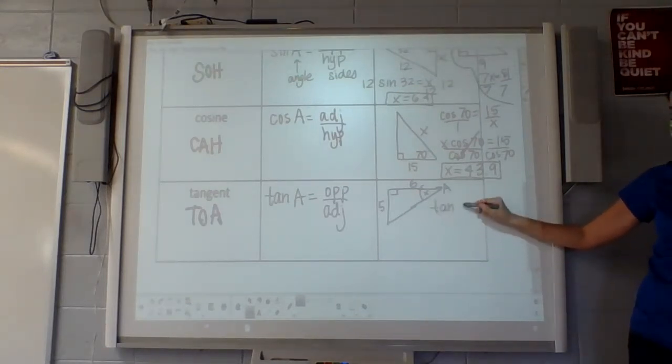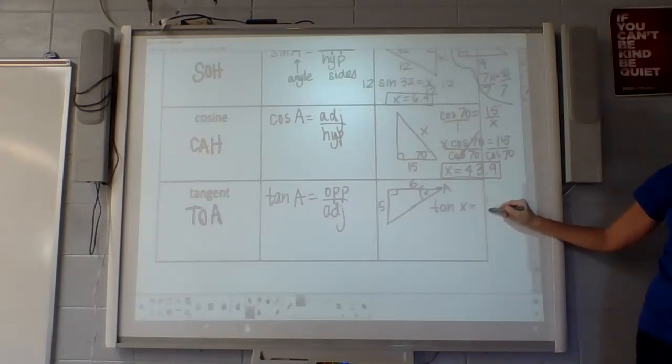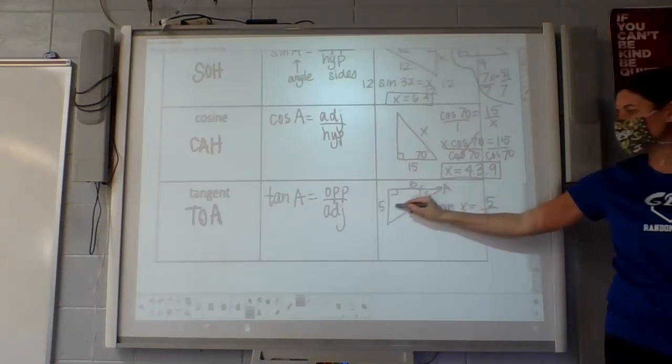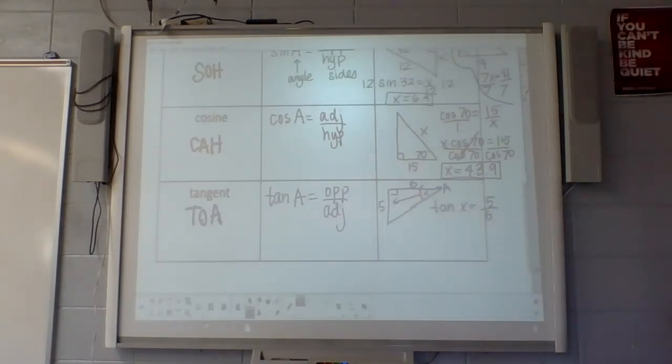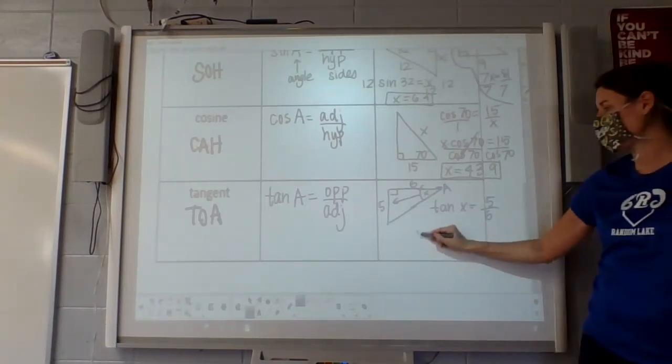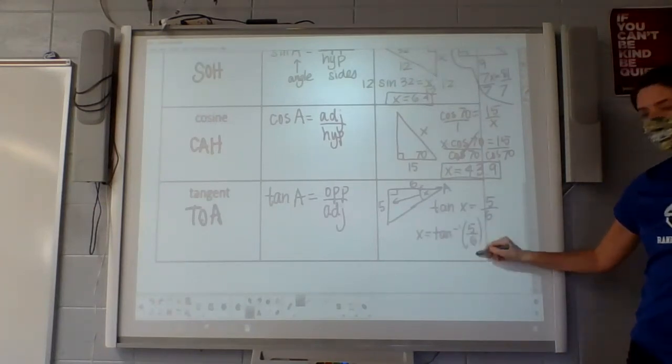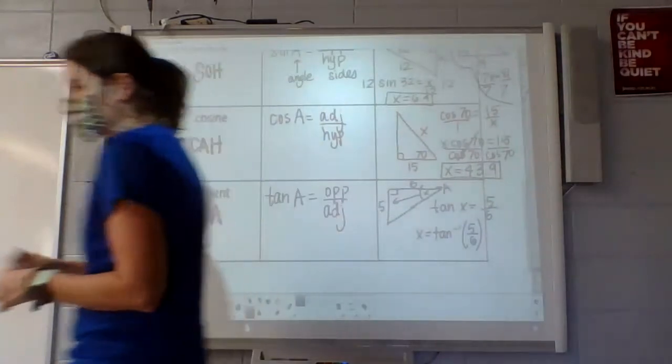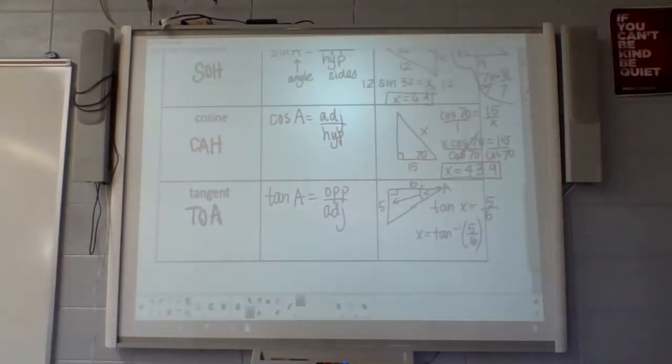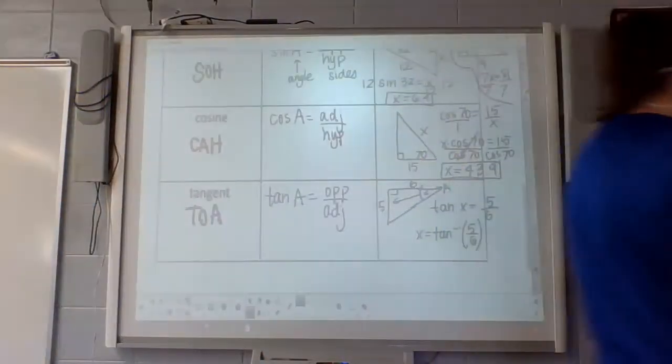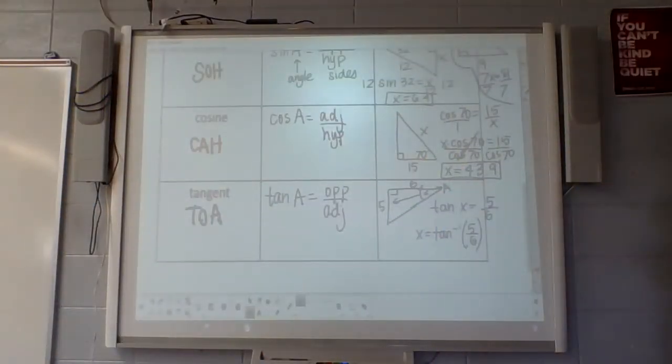So, when we do tangent of X or A, whatever you guys want to call it, it equals the opposite over the adjacent. So, we're going to solve for that X as we learned last time. This is where we do that inverse. And that will give us that angle measure. It's going to be around 40, like 39.8.